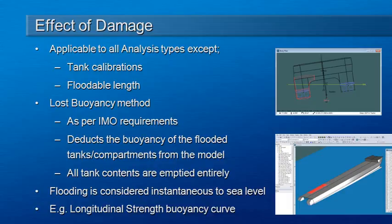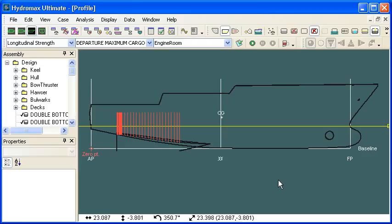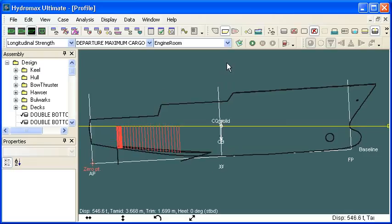Let's switch over to HydroMax. We see here a vessel which has its engine room damaged and we're carrying out a longitudinal strength analysis. If I run that analysis, we'll see that due to the damage in the engine room, the vessel trims down by the stern. If we take a look at the graph window, we see the usual curves associated with longitudinal strength.